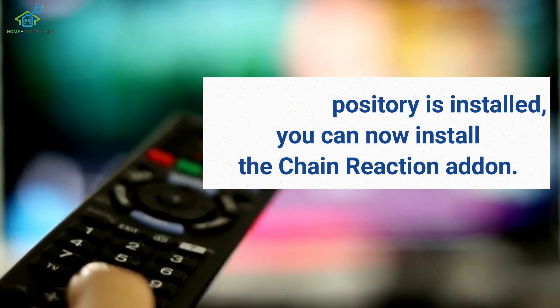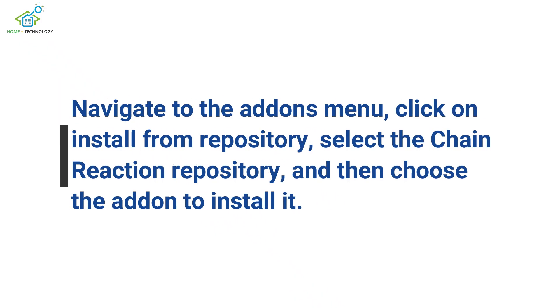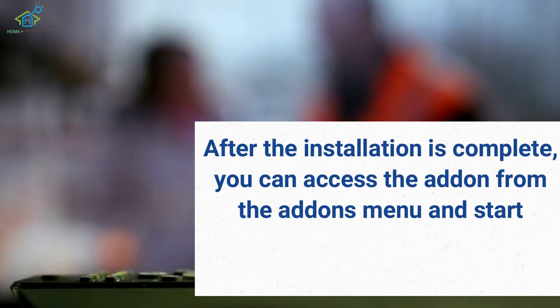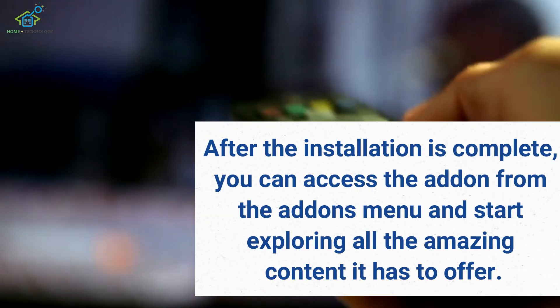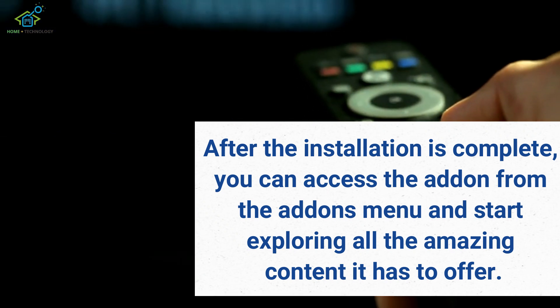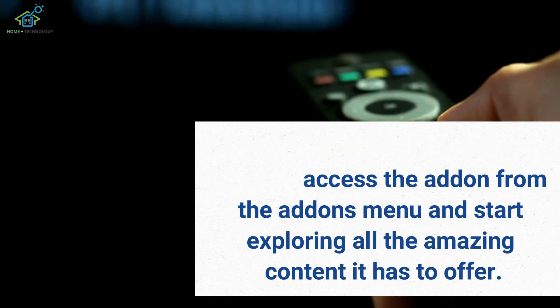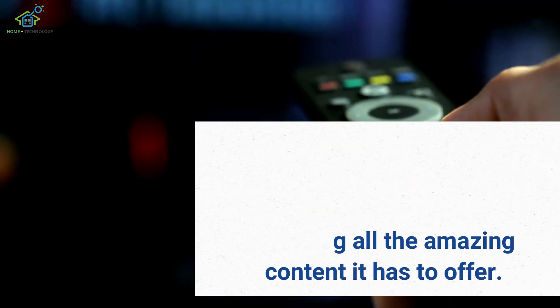Once the repository is installed, you can now install the Chain Reaction Addon. Navigate to the Add-ons menu, click on Install from Repository, select the Chain Reaction Repository, and then choose the Addon to install it. After the installation is complete, you can access the Addon from the Add-ons menu and start exploring all the amazing content it has to offer.